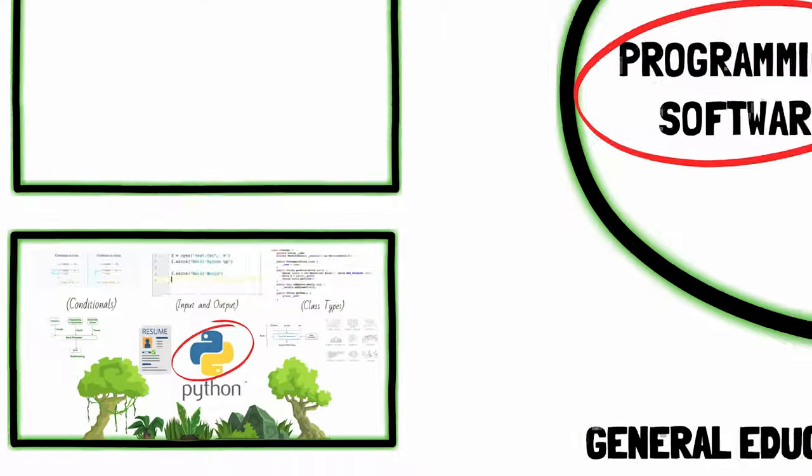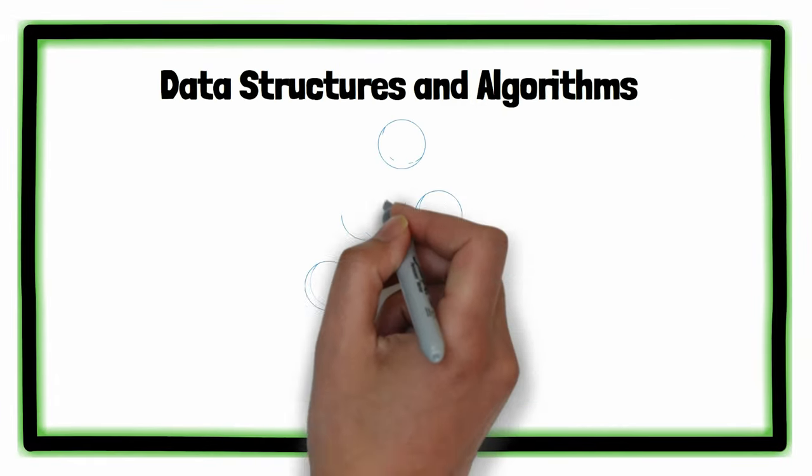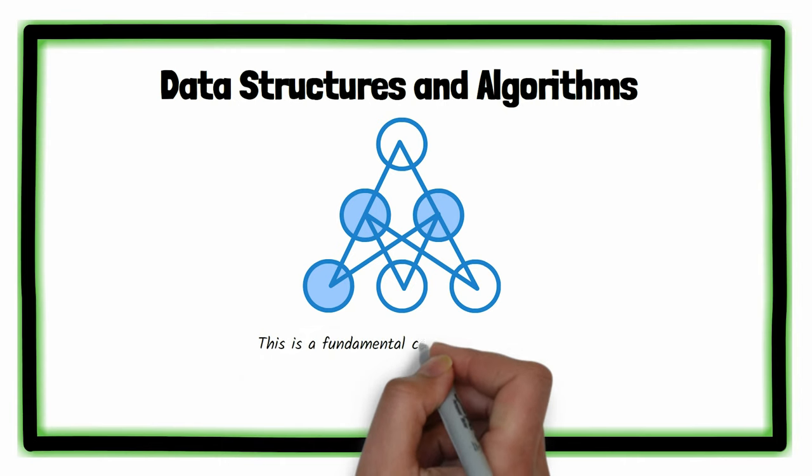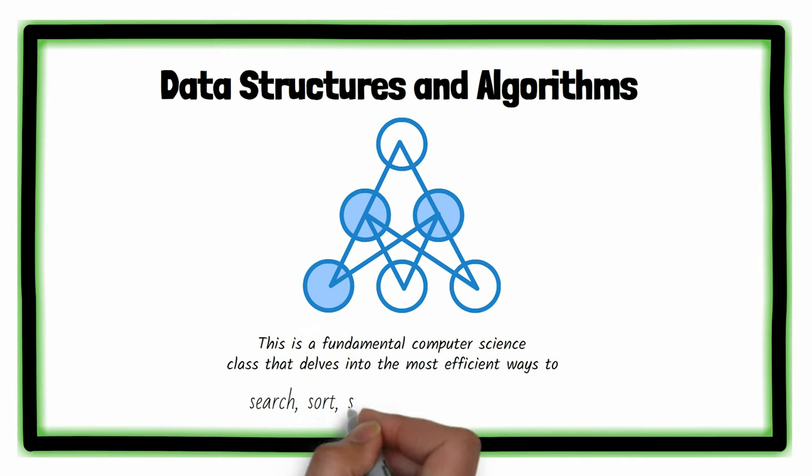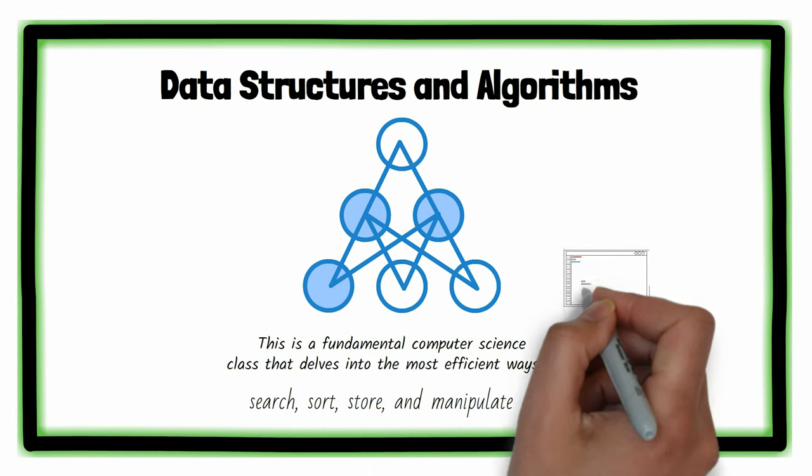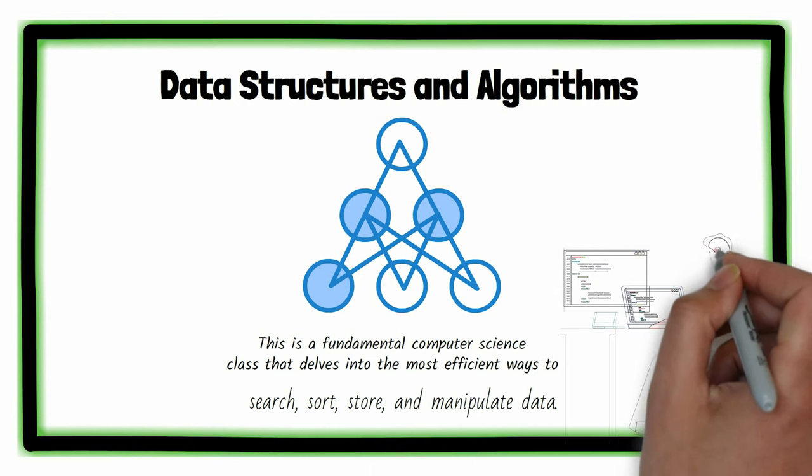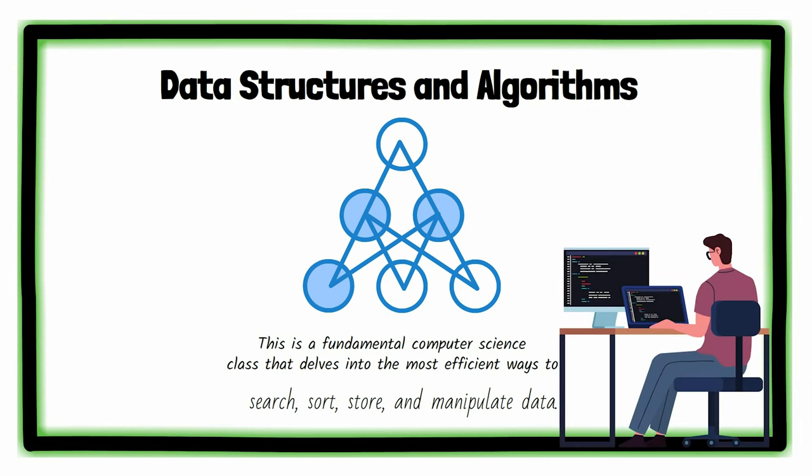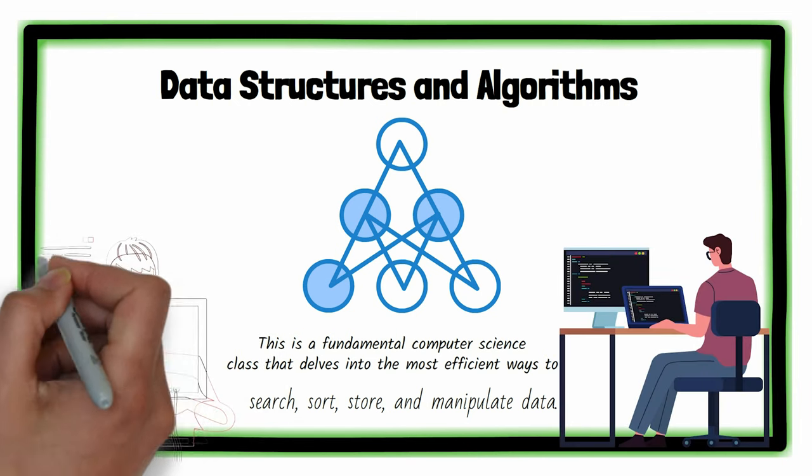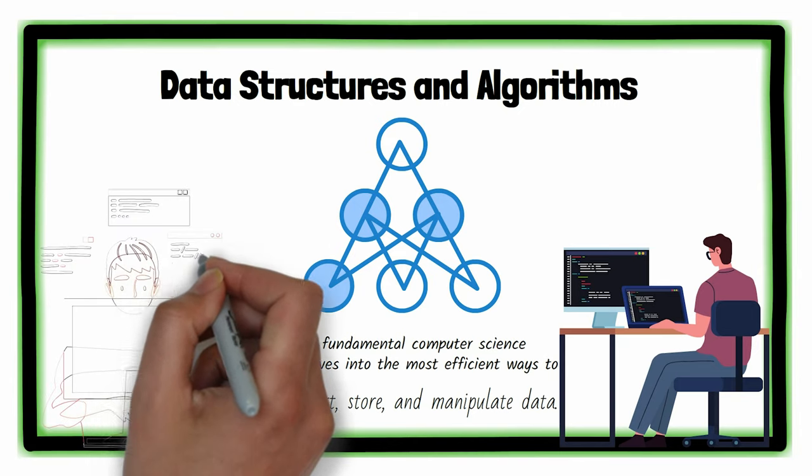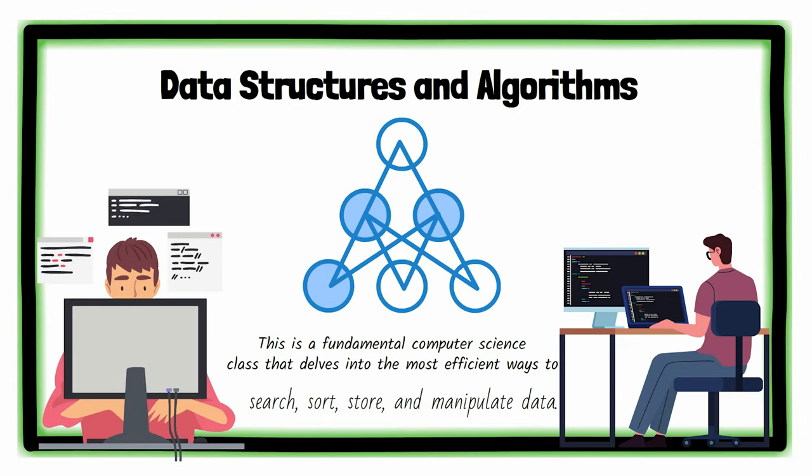Which transitions perfectly into the next core course, data structures and algorithms. This is a fundamental computer science class that delves into the most efficient ways to search, sort, store, and manipulate data. This is extremely useful if you go into any career involving programming. If this is the case, make sure to retain as much info as possible, because programming interviews will pull a lot of questions from this course specifically.